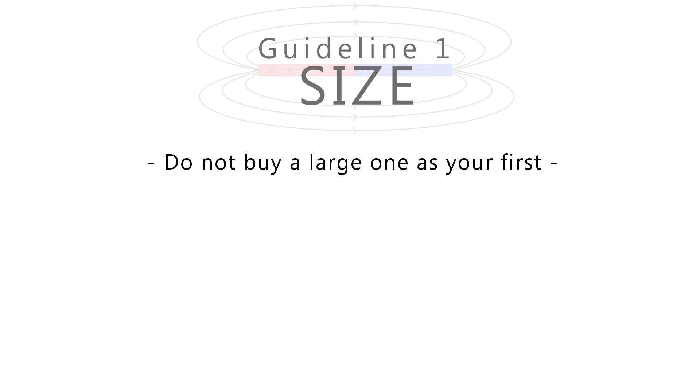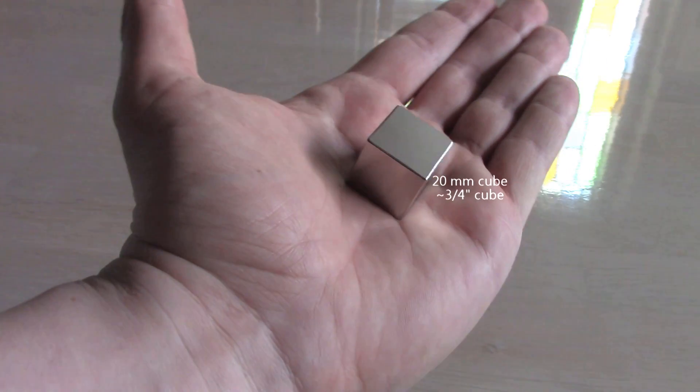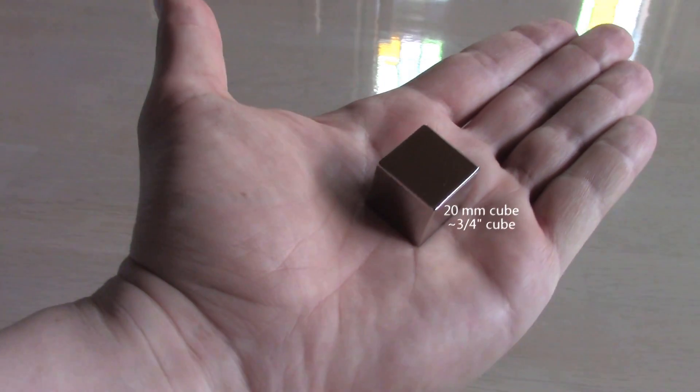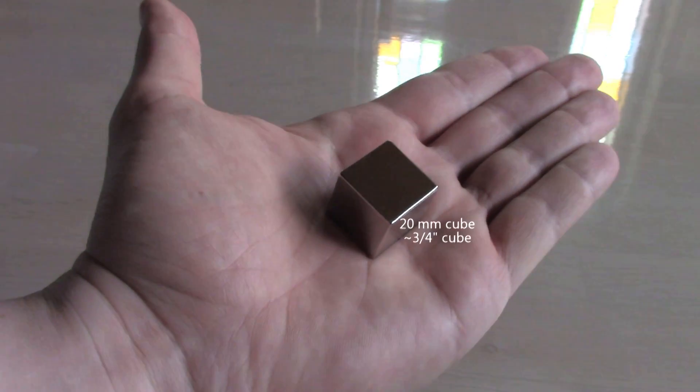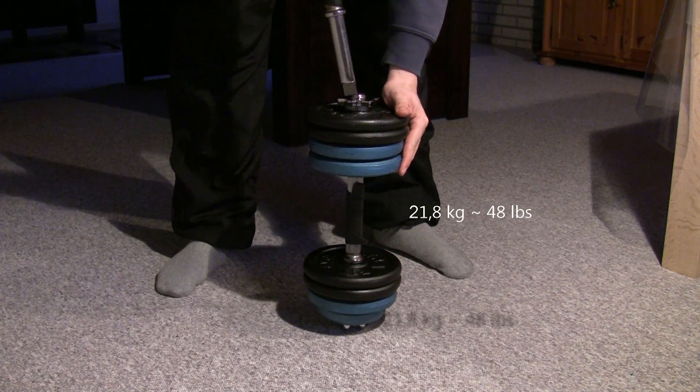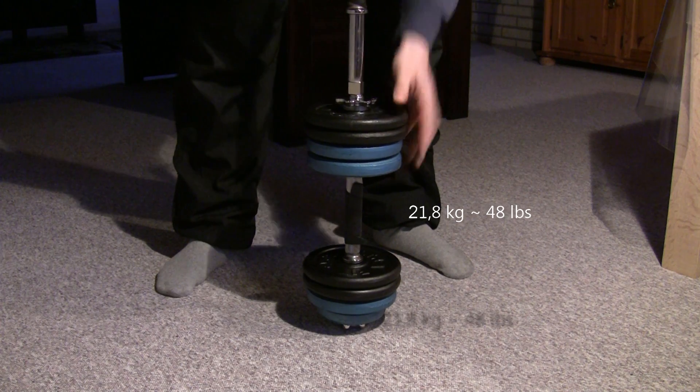So how big is large in this context? It may be smaller than you think. This is a 20 millimeter cubed neodymium magnet. It doesn't look scary but this is more than enough to give you a nasty bite. In an earlier video I showed how this magnet can lift over 20 kilograms.